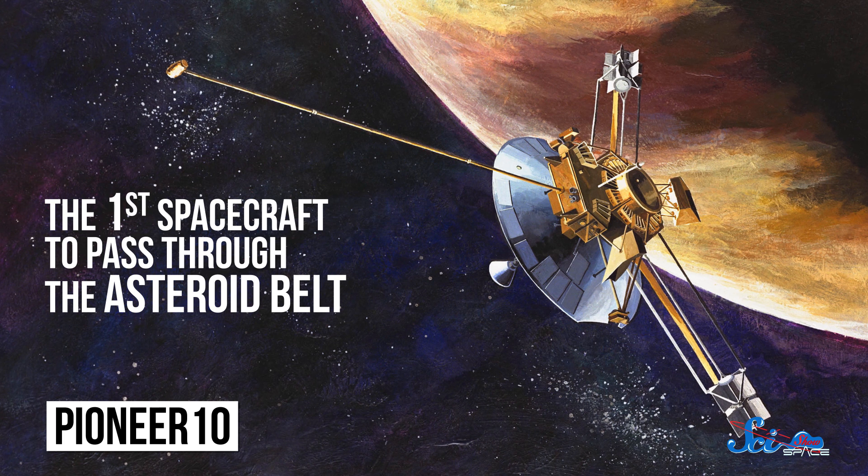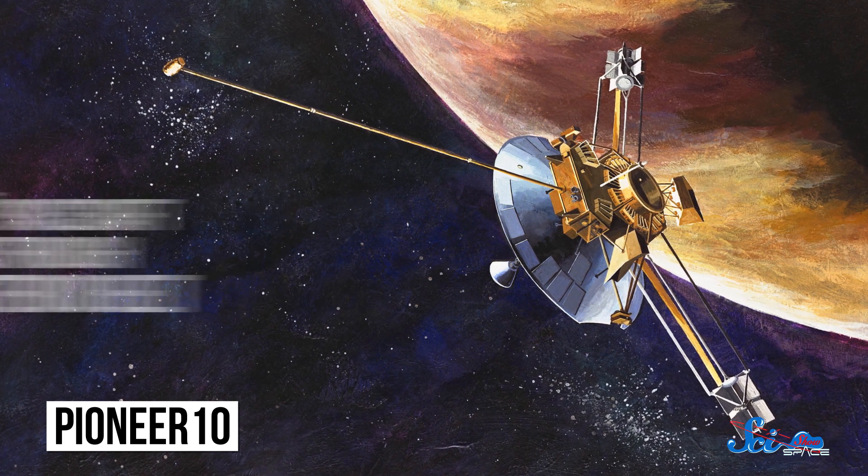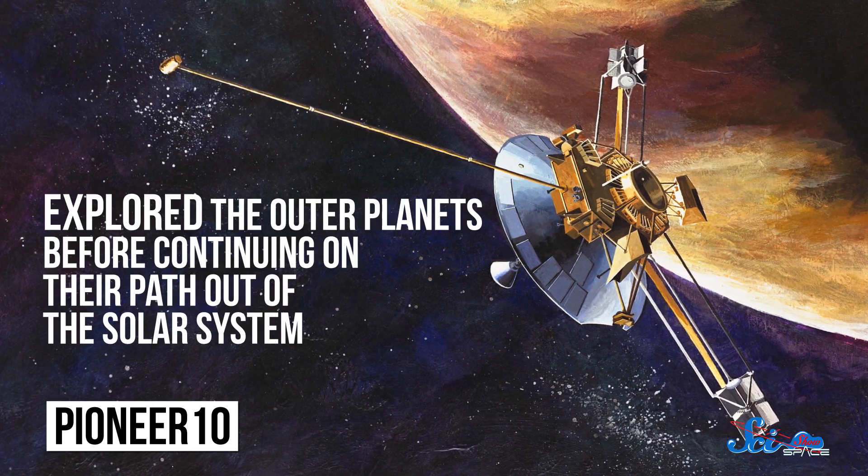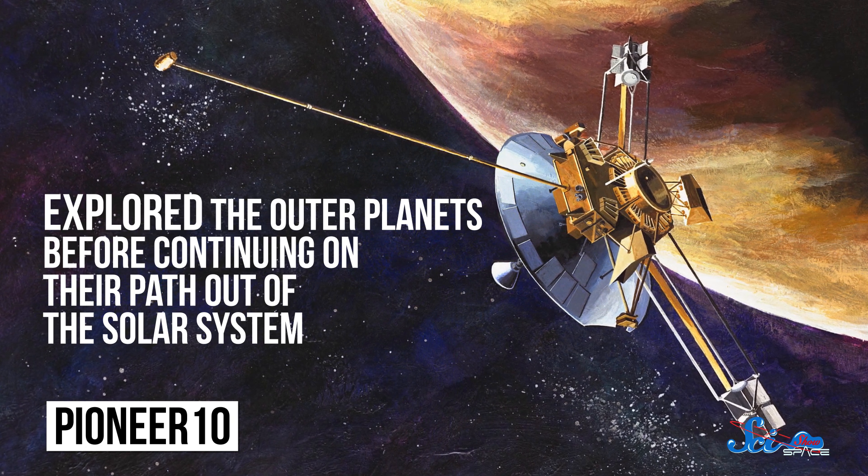Pioneer 10 was the first spacecraft to pass through the asteroid belt, and both probes explored the outer planets before continuing on their path out of the solar system.